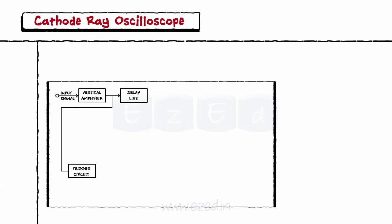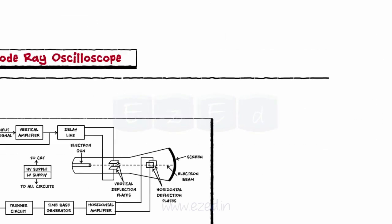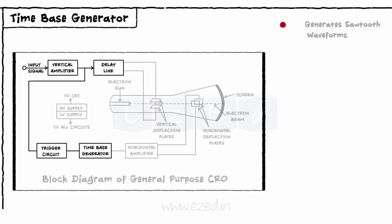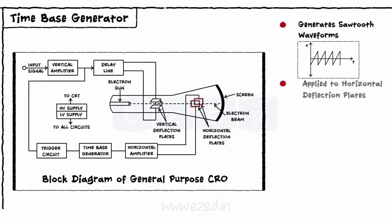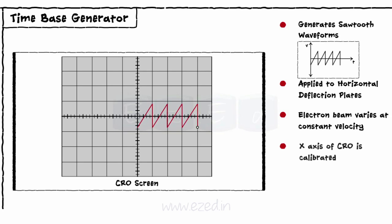The third block is a trigger circuit. This circuit generates trigger pulses which keep the synchronization between the input signal and the horizontal deflection circuit. The next block is the time base generator. Time base generator generates sawtooth waveforms and applies it between the horizontal deflection plates. As the sawtooth wave varies linearly with time, the movement of the spot on the screen takes place at a constant velocity. Hence, the x-axis of the CRO can be calibrated in terms of time and the input can be displayed with respect to time.